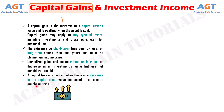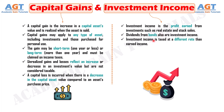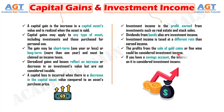On the other hand, investment income is the profit earned from investments such as real estate and stock sales. Dividends from bonds also are investment income. Investment income is taxed at a different rate than earned income. The profits from the sale of gold coins or fine wine could be considered investment income. If you have a savings account, the interest you earn on it is considered investment income.